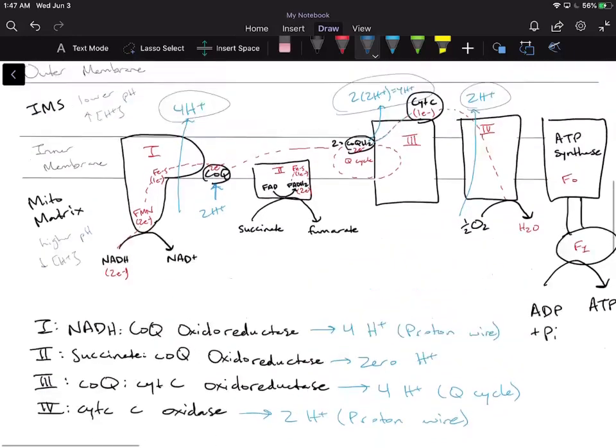Now if we look at FADH2, let's see how many protons we're going to be pumping through FADH2. Succinate is going to be oxidized to fumarate and we're going to get those electrons into FADH2 and complex 2. And then remember, coenzyme Q is a mobile electron carrier that accepts electrons from both complex 1 and 2, so it's going to take those electrons from complex 2 and pass them to complex 3.